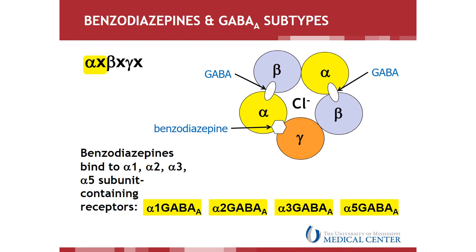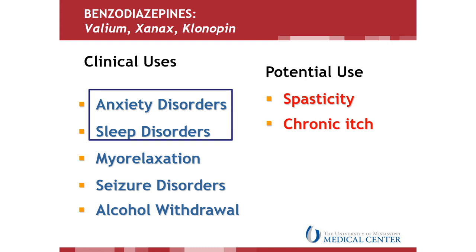Looking at the GABA-A receptor from above, you can see the GABA binding site between the alpha and the beta subunits, and the benzodiazepine binding site between the alpha and the gamma subunits. Benzodiazepines are commonly prescribed for anxiety and sleep disorders; however, they also have other clinical uses including myorelaxation, seizure disorders, and alcohol withdrawal. New potential uses are also being investigated, including for the treatment of spasticity and chronic itch. However, given the high prevalence of anxiety and sleep disorders, these remain the main reasons for benzodiazepine prescriptions around the world.